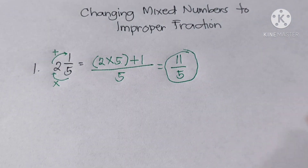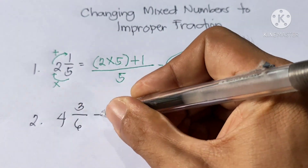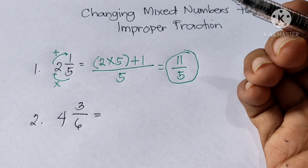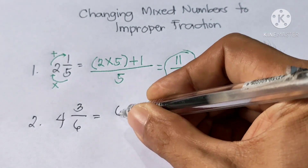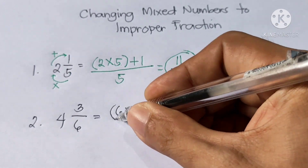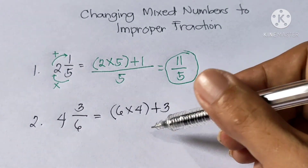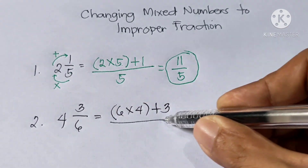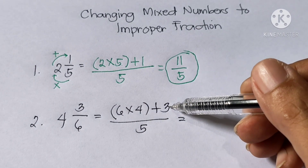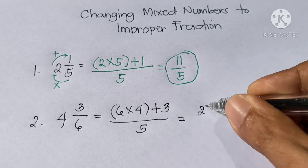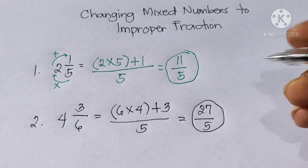Example number 2: 4 and 3 over 6. Again, first step — multiply the denominator by the whole number: 6 times 4 is 24. Then add the numerator: plus 3. Last step, copy the denominator. So, 6 times 4 is 24, plus 3 is 27, over 6. So, the answer is 27 over 6.